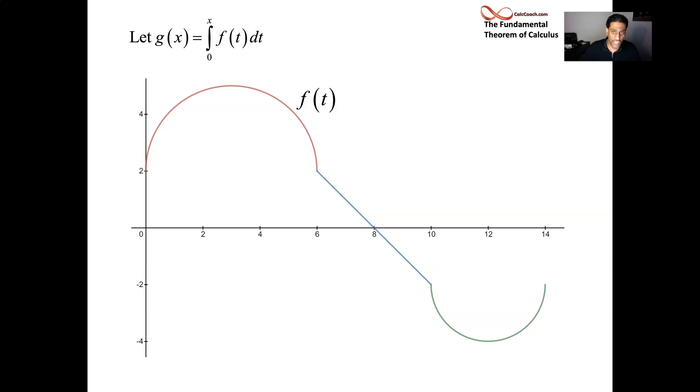So we're talking about g of x being equal to some constant a to x, the integral of some function f of t. And so we're going to look at an example. It has multiple parts to it, multiple questions that we're going to answer about this particular function who is made up of a semicircle and then a line and another semicircle. We'll call that function f of t.